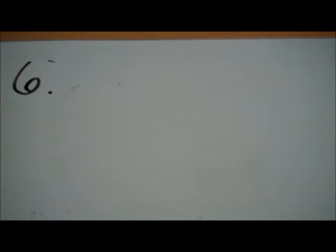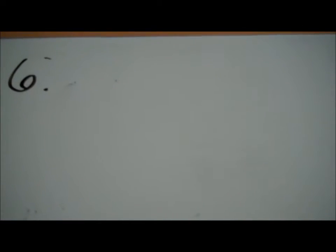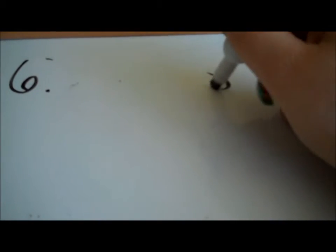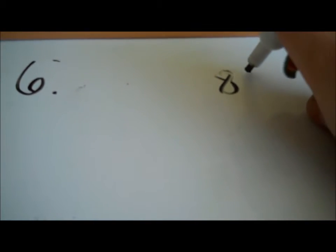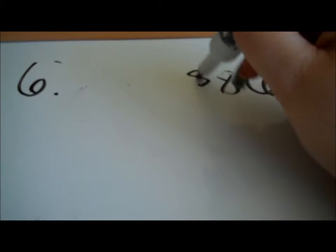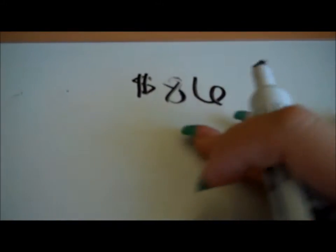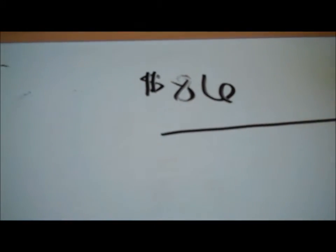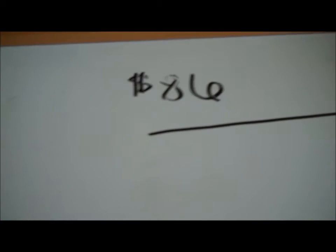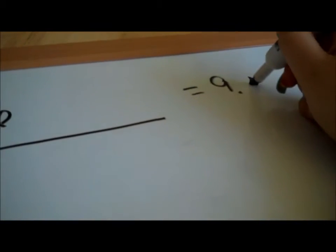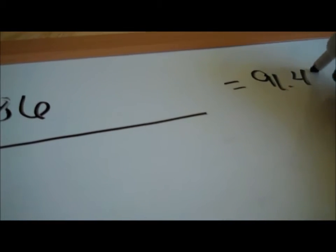Number 6 has to do with a hotel cost or a hotel bill. Number 6 says they spent $86 on their room for the night, so $86. The final bill came up to $91.44, so that means the cost here is going to have to equal $91.44.